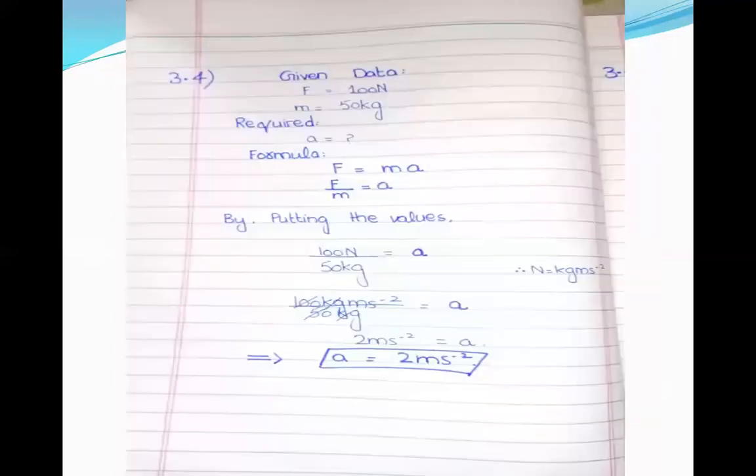Numerical number 4. The statement is: find the acceleration produced by a force of 100 N in a mass of 50 kg. We want to find acceleration. We have force equals 100 N and mass equals 50 kg.